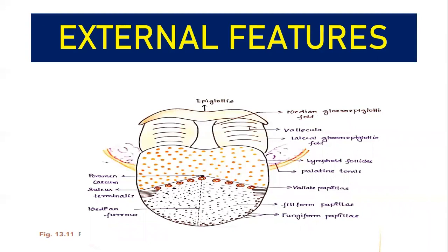Now moving on to the pharyngeal part — that is posterior one-third of the tongue. Only one thing you must remember: it contains aggregation of lymphoid follicles. All those round structures present are your lymphoid follicles, which aggregate together to form something called lingual tonsil. Tonsil is nothing but aggregation of your lymphoid follicles. Since the aggregation of lymphoid follicles is present in your tongue, it is called lingual tonsil. Aggregation of lymphoid follicles — that is your lingual tonsil — is found in your pharyngeal part or posterior one-third of the tongue.